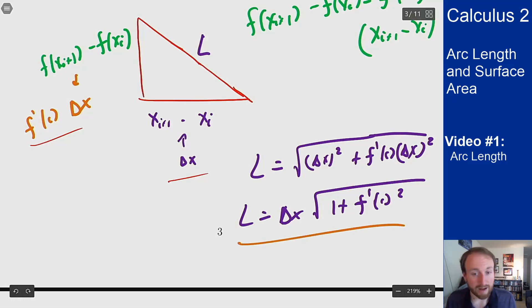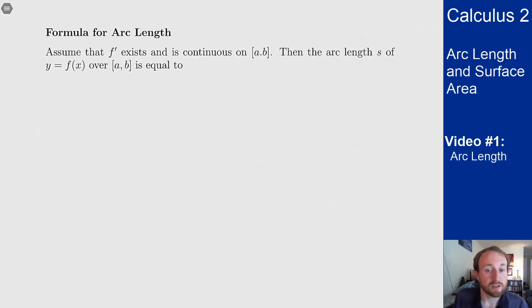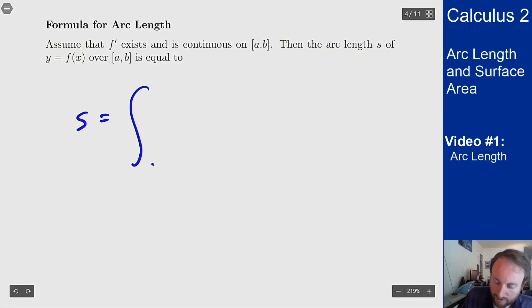When I do that I get the following. Assume f' exists and is continuous on the interval from a to b. The arc length s, we'll use s to be our letter to indicate arc length, of the graph of f(x) over this interval is equal to the integral from a to b of the square root of 1 plus f'(x) squared dx.